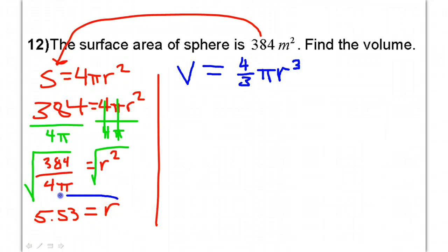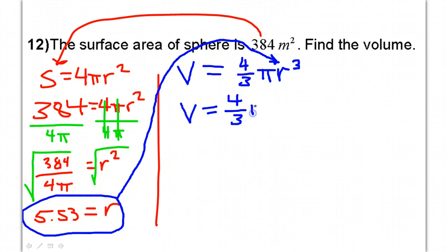Now I have the radius, so I can take that and put it in where it goes. That's going to give me the volume is 4 thirds pi times 5.53 cubed.